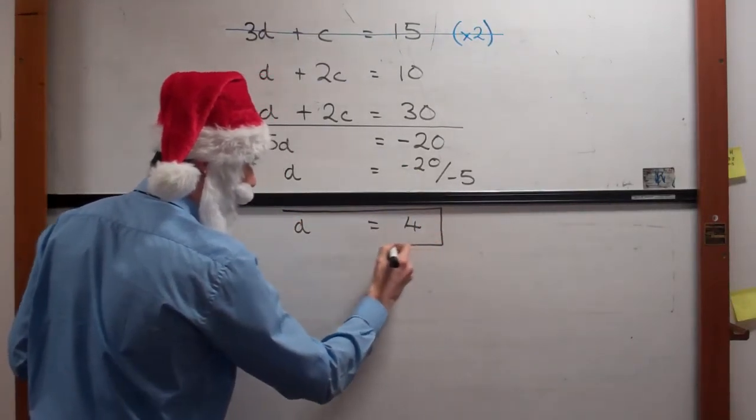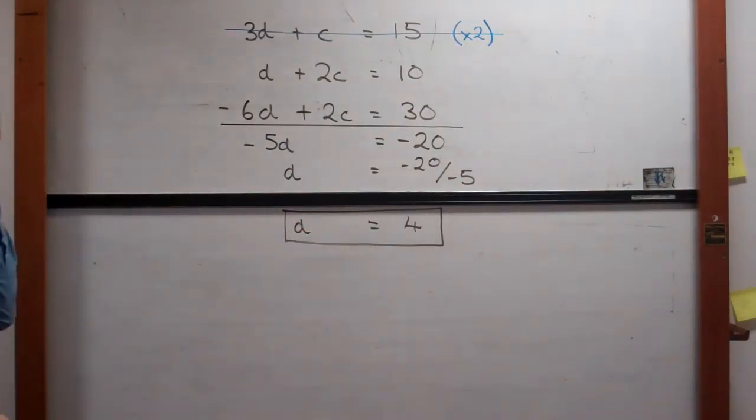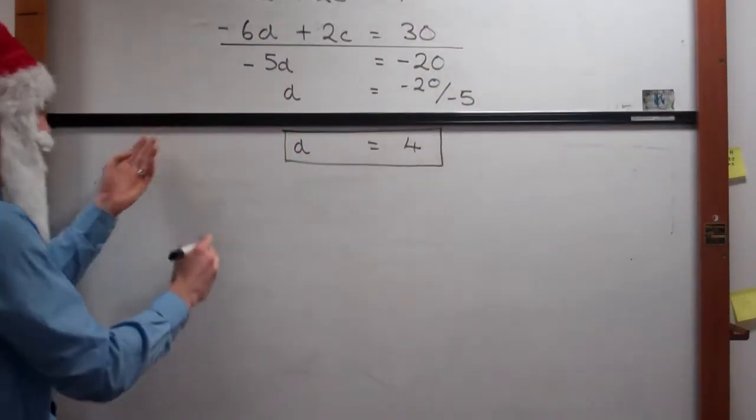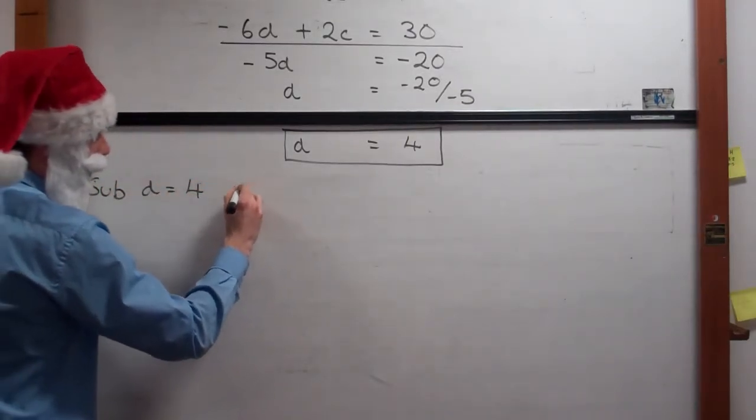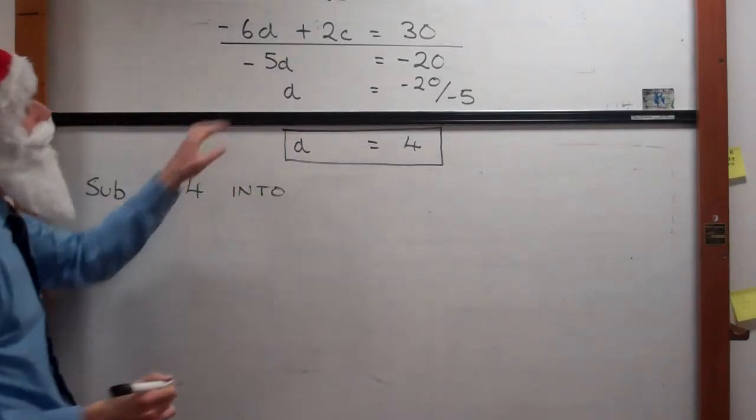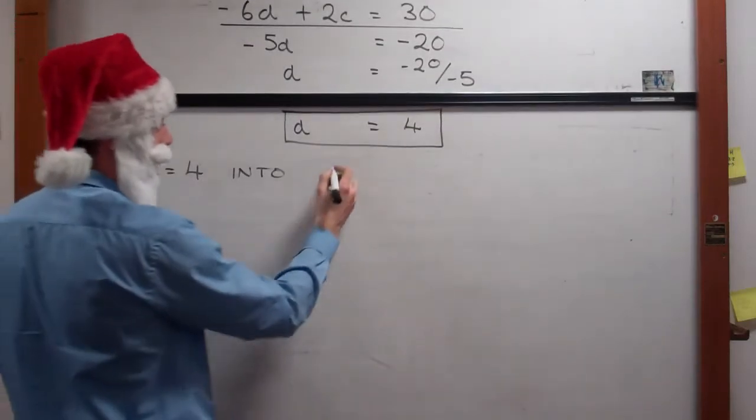So the weight of a doll is 4 kilograms. Now we need to find out what the weight of a car is. So we're going to substitute D equals 4 into one of our equations. Let's pick this one: D plus 2C equals 10.